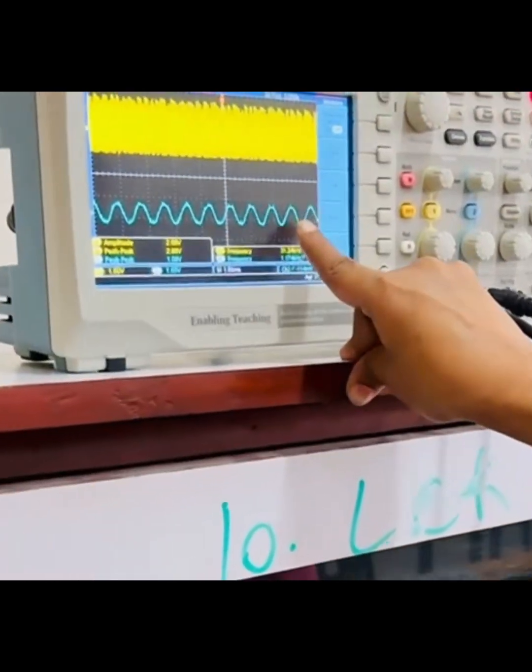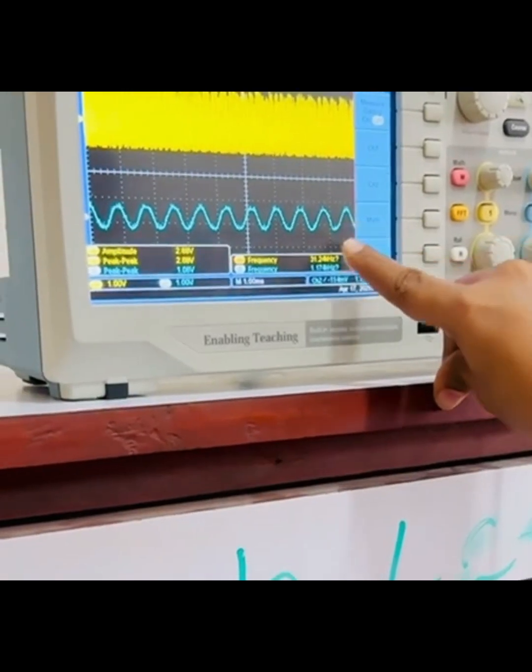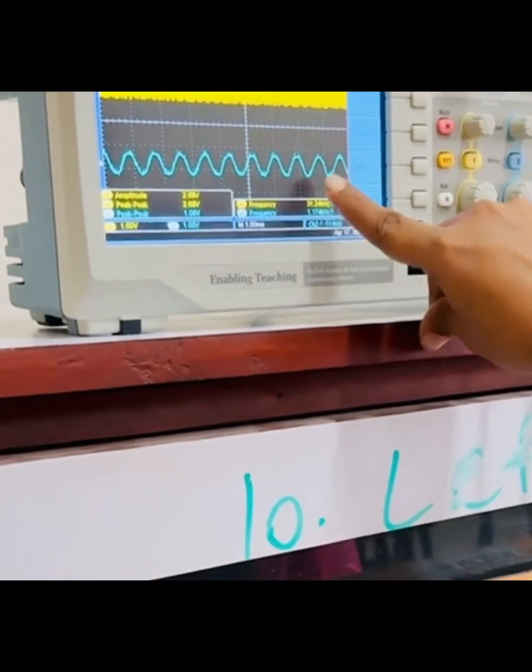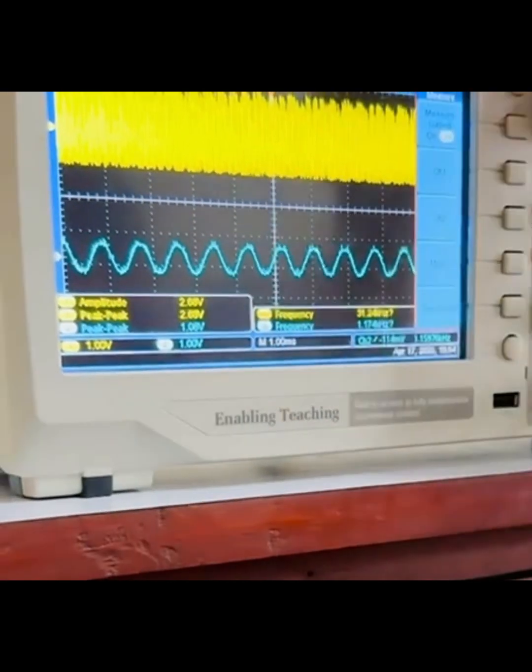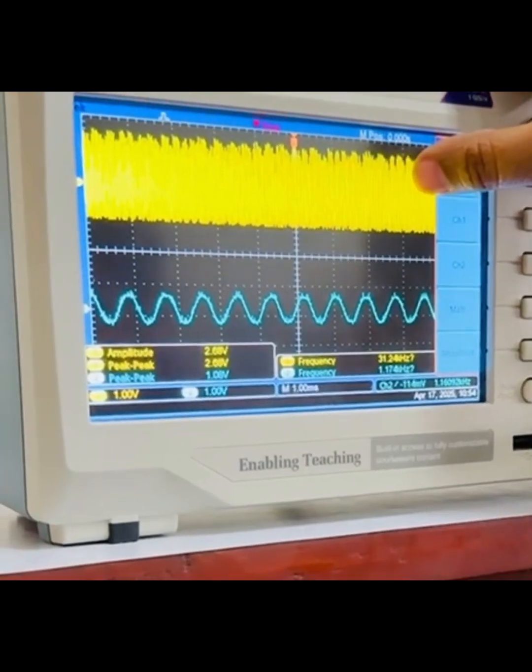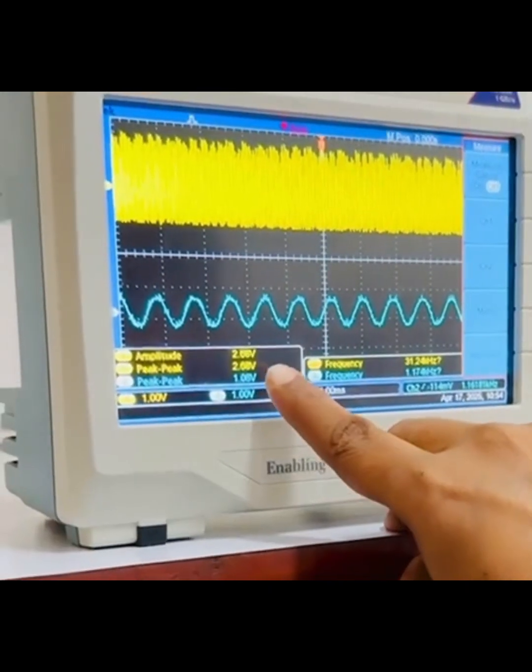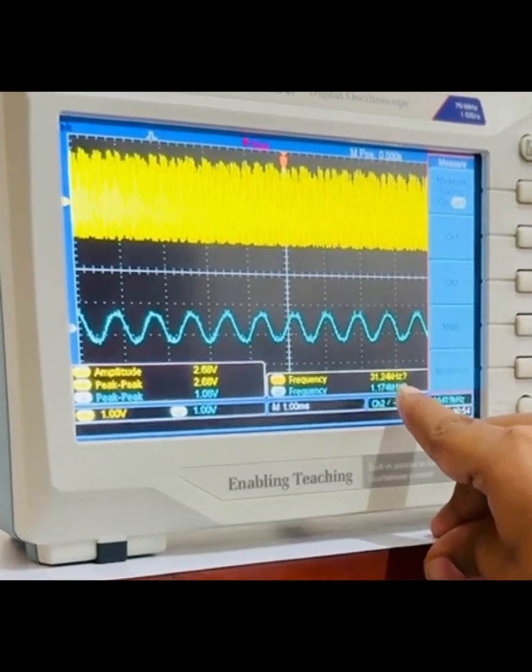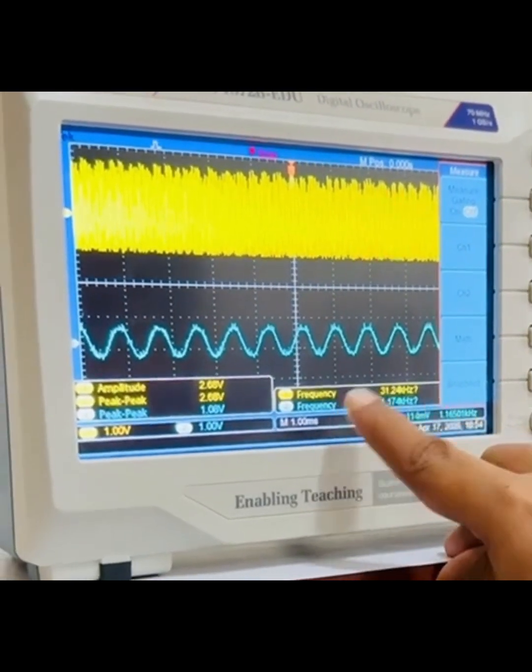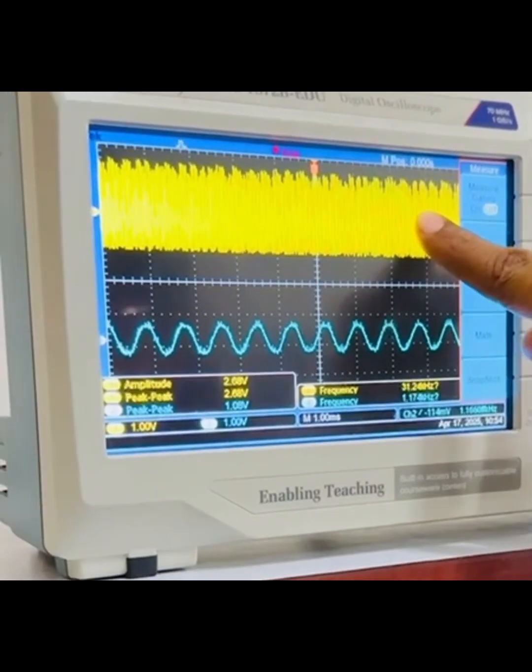We have adjusted the frequency of modulating signal around 1 kilohertz and its amplitude is adjusted around 1 volt, while the amplitude of carrier is adjusted around 2.6 or 2.5 volts and the frequency is fixed at 31.24 kilohertz. We cannot change the frequency of carrier signal.